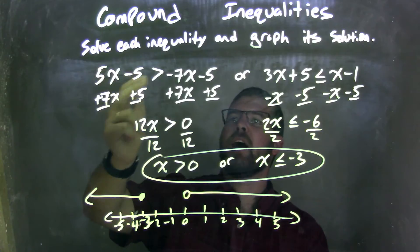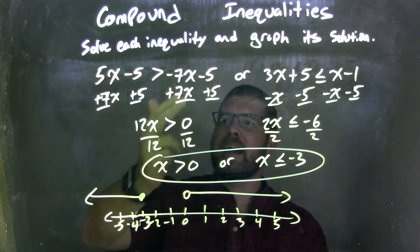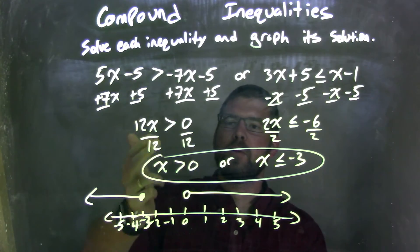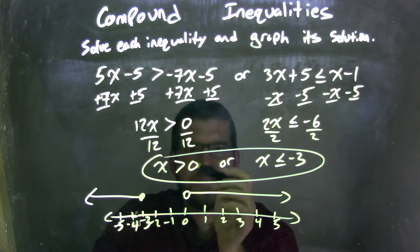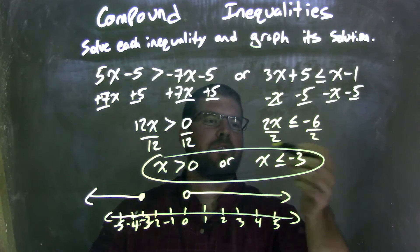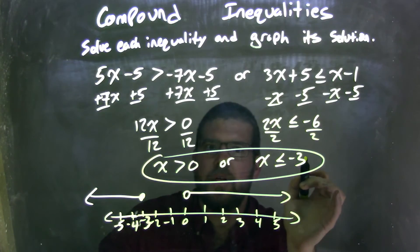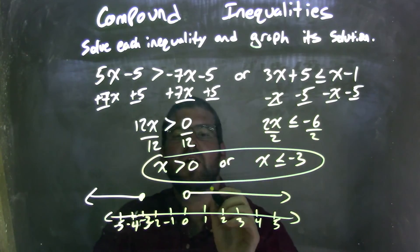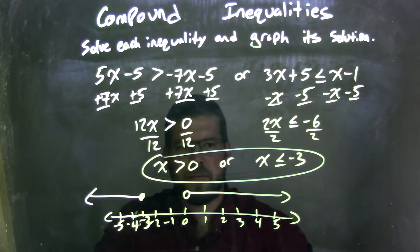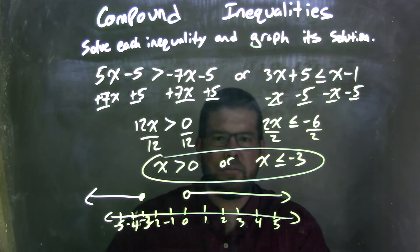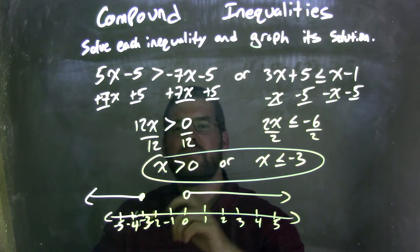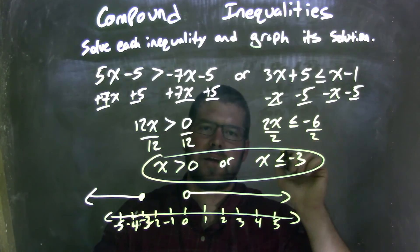Let's recap. We were given 5x minus 5 is greater than negative 7x minus 5. I added 7x and 5 to both sides, giving me 12x on the left and 0 on the right. Dividing both sides by 12 gives x is greater than 0. For the right-hand side, I brought x's to the left and numbers to the right, giving 2x less than or equal to negative 6, then divided by 2 to get x less than or equal to negative 3. On the graph: open circle at 0 with arrow to the right, closed circle at negative 3 with arrow to the left. Final compound answer: x is greater than 0 or x is less than or equal to negative 3.